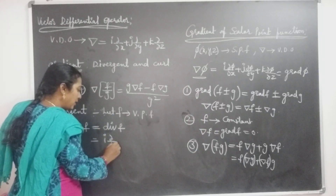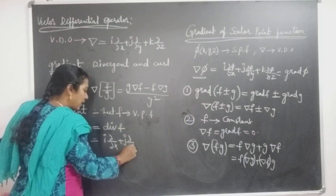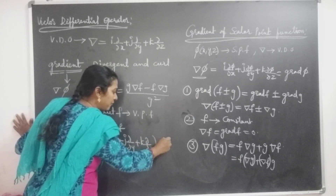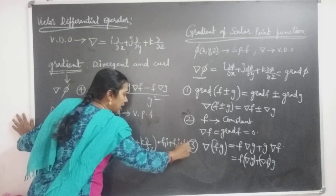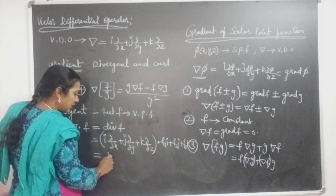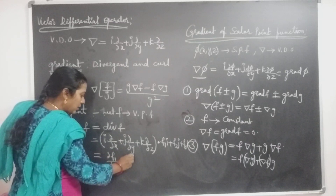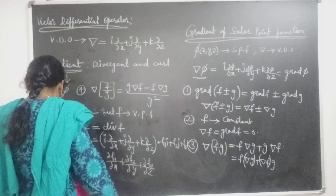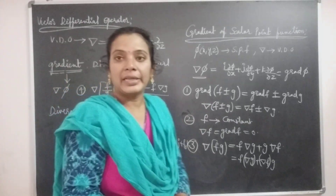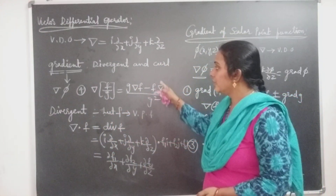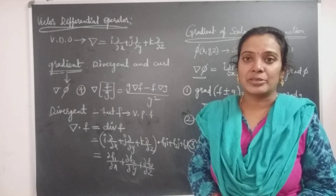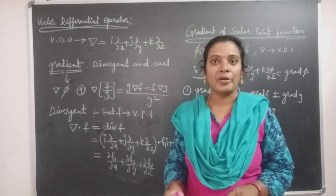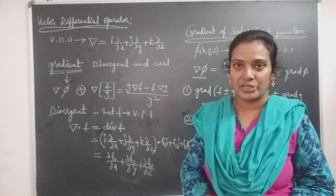Del equals i ∂/∂x plus j ∂/∂y plus k ∂/∂z, and the vector F equals F1·i plus F2·j plus F3·k. Then the dot product equals ∂F1/∂x plus ∂F2/∂y plus ∂F3/∂z. The divergence means the dot product between the vector point function and the vector differential operator del.